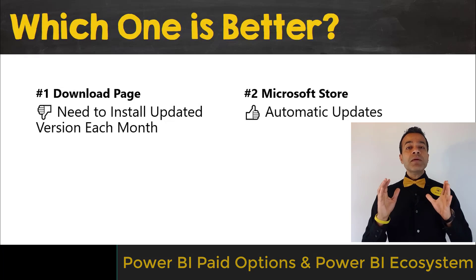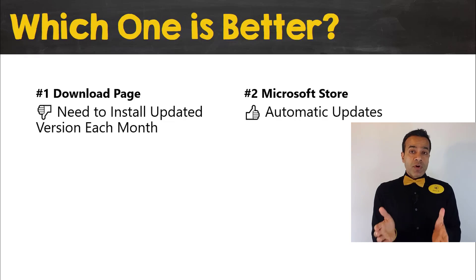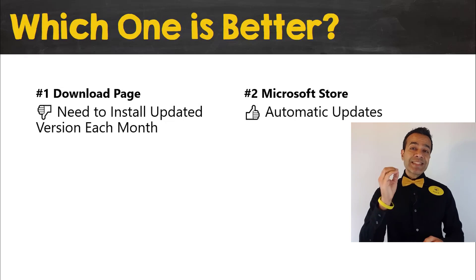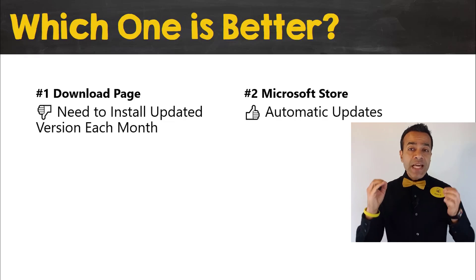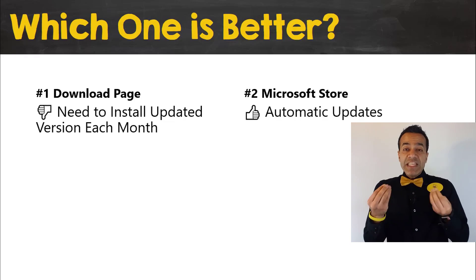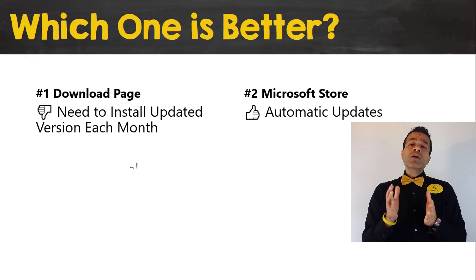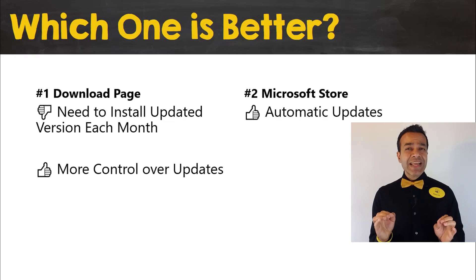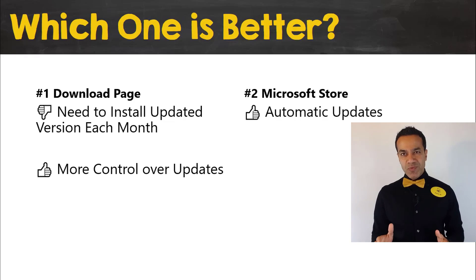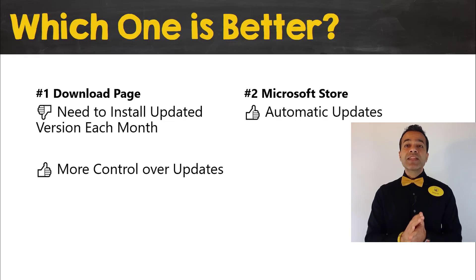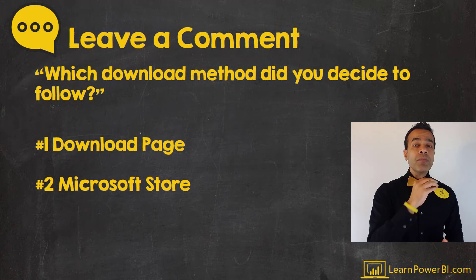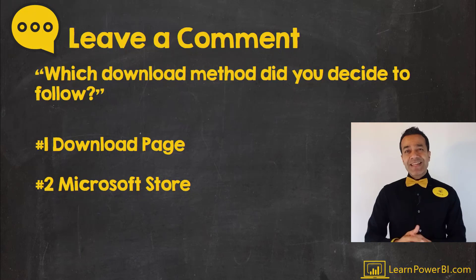Using the second method — getting Power BI Desktop from the Microsoft Store — your version would be updated automatically each time a new version is released. This can reduce the hassle of downloading and installing a new version each time. However, the first method gives you more control over when you choose to upgrade, which can protect you in case there are minor bugs in the updated version. By waiting, it's likely those bugs have been caught and resolved thanks to folks using the automatic update approach.